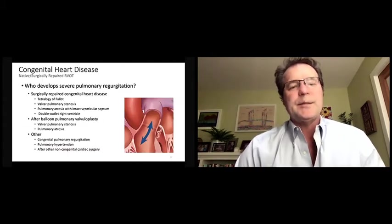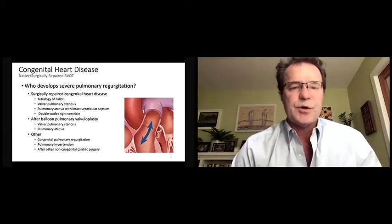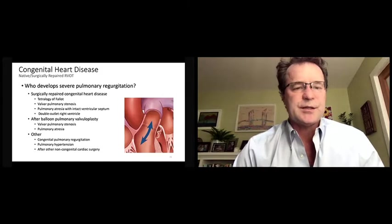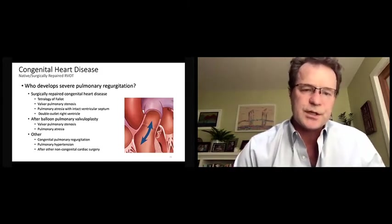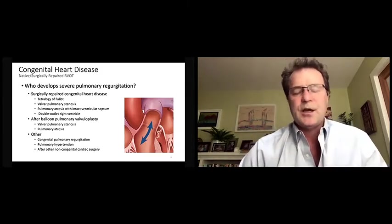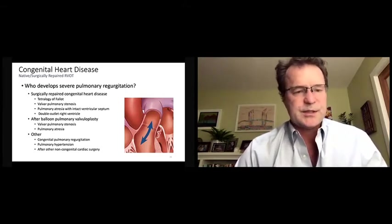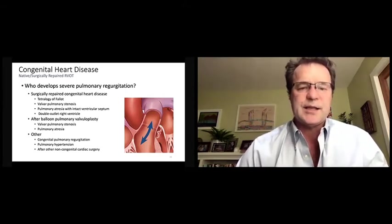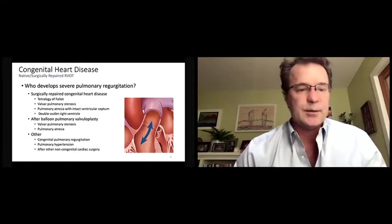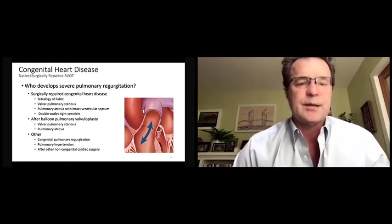In a right ventricular outflow tract that is large, abnormal, and complicated. It's this subset of patients with congenital heart disease primarily who the Harmony valve is specifically designed to meet. So, who developed severe pulmonary regurgitation? The most common group of patients are those with usually surgically repaired congenital heart disease, most commonly tetralogy of Fallot, but also valvar pulmonary stenosis, pulmonary atresia with intact ventricular septum, double outlet right ventricle, and occasionally some other conditions.